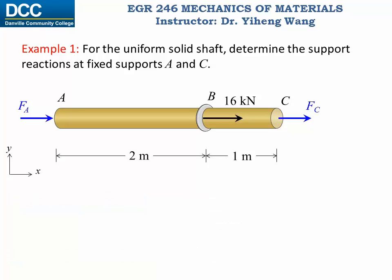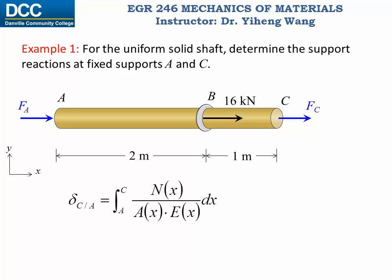Recall the general equation to determine the displacement: delta C relative to A is the integration from point A to point C of N, the internal normal force as a function of position, over A, the cross-sectional area, and E, Young's modulus. In this case, since the shaft is divided into two segments — AB and BC — and within each segment the internal normal force, cross-sectional area, and Young's modulus are all constants, this equation becomes the summation of NL over AE.